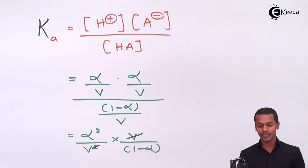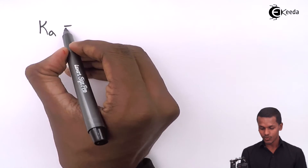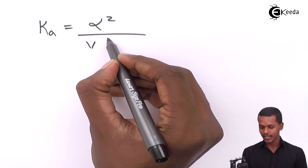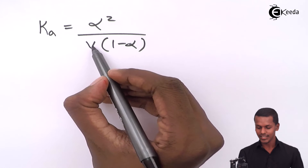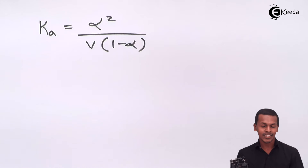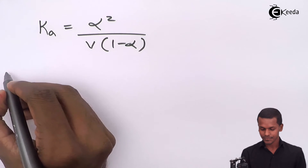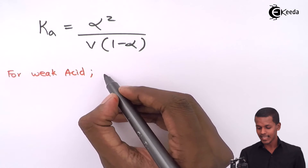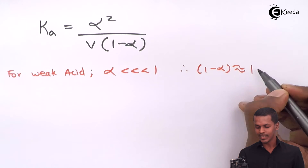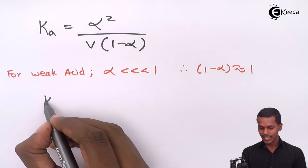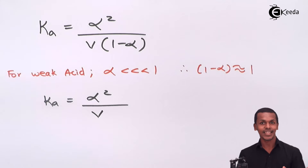Cancelling terms, we get the dissociation constant Ka equals alpha² divided by V(1 − alpha). Since it is a weak acid, alpha is very much smaller than 1, so (1 − alpha) is approximately 1. Therefore Ka simplifies to alpha²/V, and we have the expression Ka = alpha²/V.